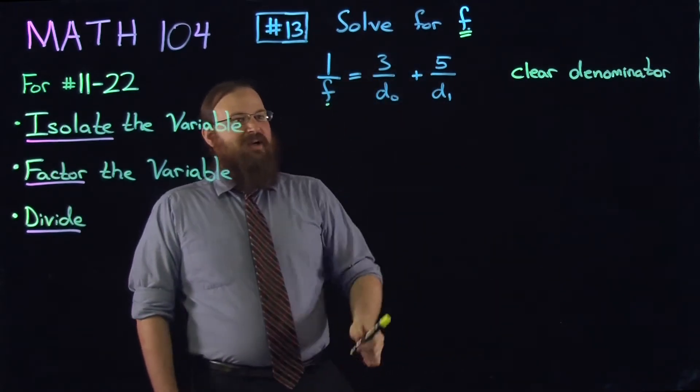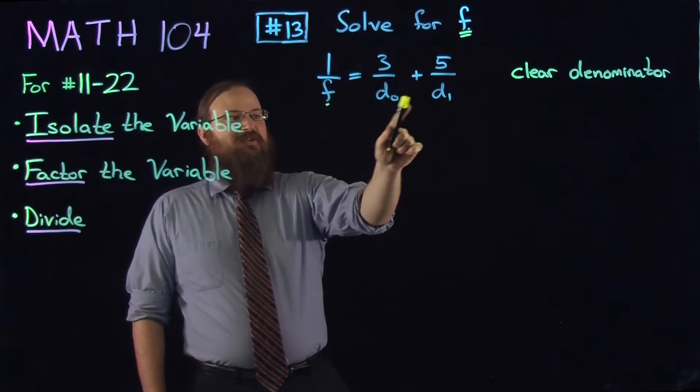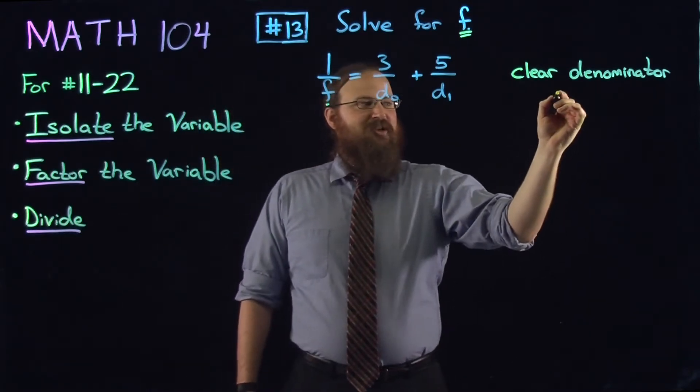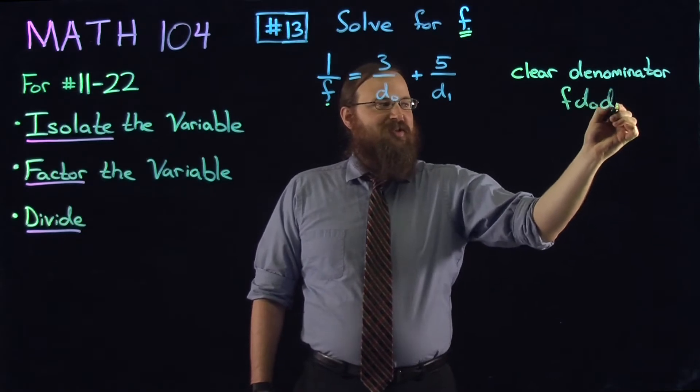We'll clear the denominator by finding a common factor, or the common denominator, f, d0, and d1. So the common denominator here is f times d0 times d1.